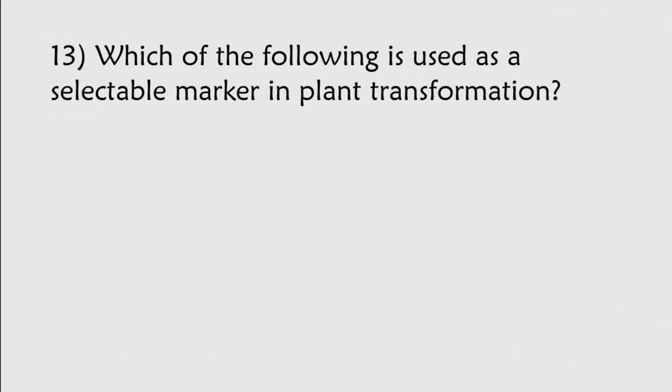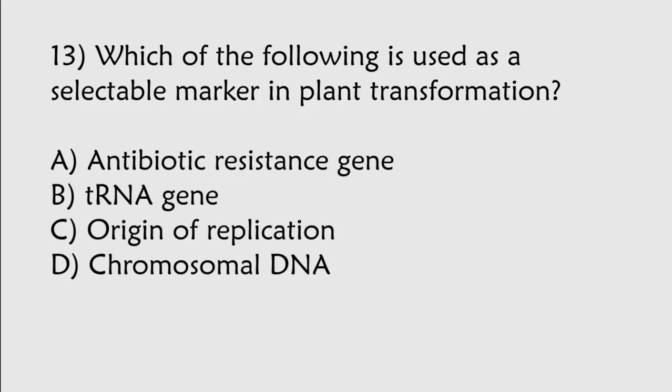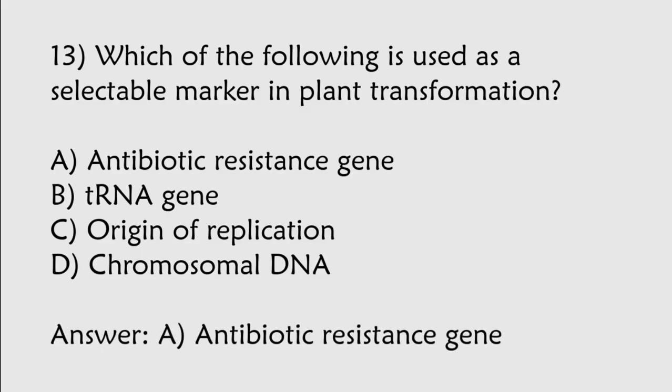Which of the following is used as a selectable marker in plant transformation? Antibiotic resistance gene, tRNA gene, origin of replication, chromosomal DNA. Correct answer is Option A, antibiotic resistance gene.